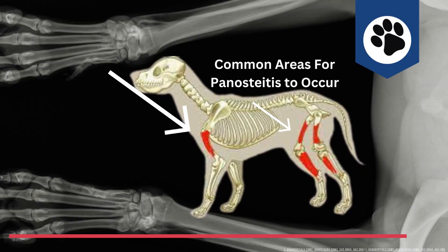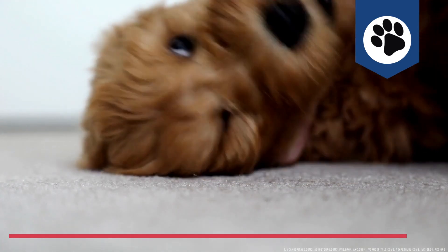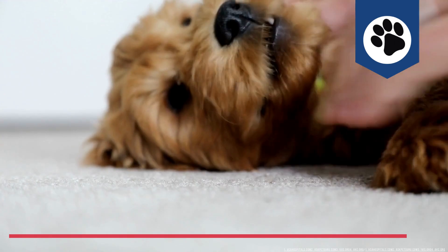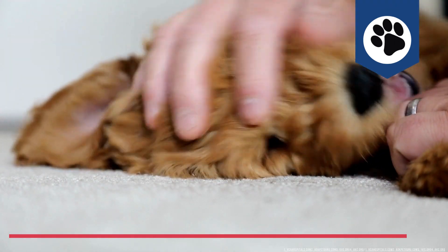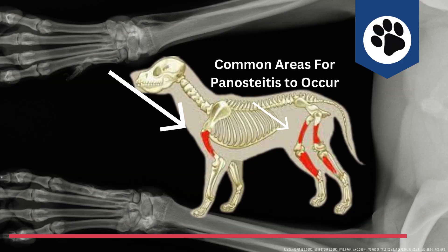Panosteitis is a painful inflammation of the outer surface or shaft of one or more long bones of the legs in dogs. It is sometimes called growing pains. Panosteitis may occur in more than one bone at a time or may move around, causing a shifting lameness that goes from one bone or leg to another.